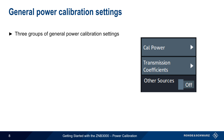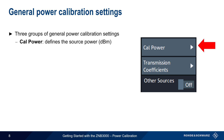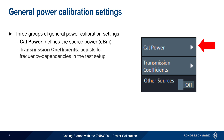Under the General Power Calibration Settings, the most important setting is Calibration Power, which defines the source power in dBm. The Transmission Coefficient Settings are used to compensate or adjust for frequency-dependent behavior of devices in the test setup. The Switch Off Other Sources checkbox is used to ensure that only the calibrated source is on during calibration.